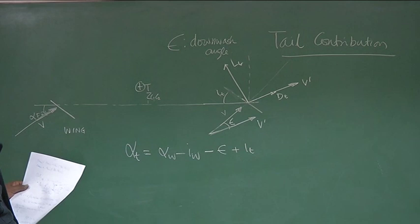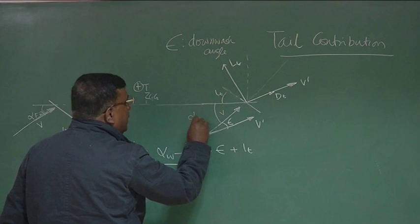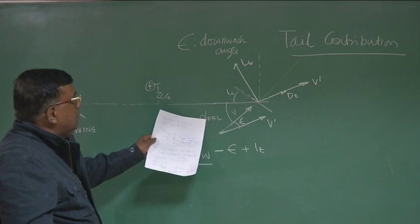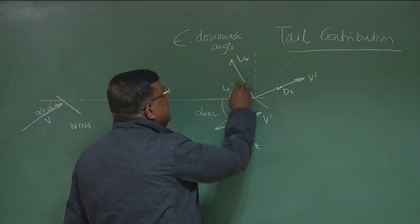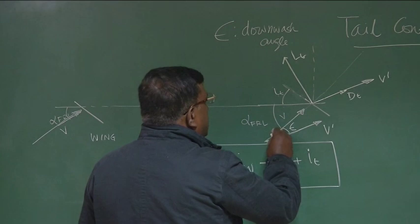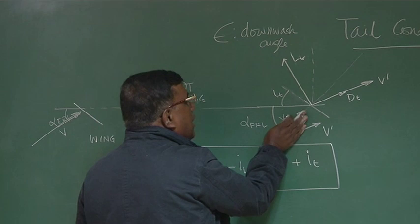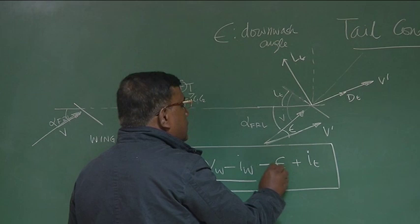Is it clear? This is the velocity vector, this is alpha_FRL. The angle seen by the tail is: if epsilon was not there, it would be alpha_FRL plus i_T. But because of epsilon, there is a reduction in the angle. Also from this diagram, this angle is nothing but alpha_FRL minus epsilon. So nothing stops us from writing this expression for M_t: it is L_T into cos(alpha_FRL minus epsilon) plus D_tail·sin(alpha_FRL minus epsilon), minus D_tail·cos(alpha_FRL minus epsilon) minus L_T·sin(alpha_FRL minus epsilon), plus M_AC_tail.